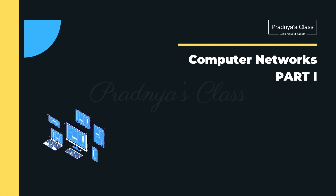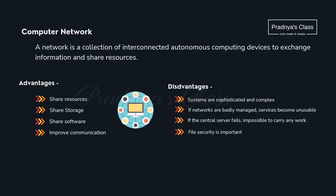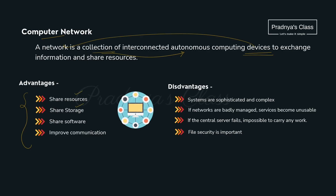It is a complete theoretical portion, so keep the points in mind. In the first topic, we will try to understand what is a network. When we connect devices to each other, it is called a network — nothing but a collection of interconnected devices. The advantages include resource sharing, storage, software sharing, and improved communication.